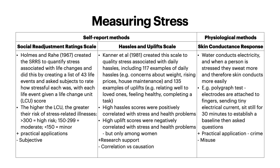When it comes to measuring stress, you've got self-report methods and physiological methods. Looking at self-report methods, Holmes and Rahe in 1967 created the Social Readjustment Rating Scale (SRRS) to quantify stress associated with life changes. They created a list of 43 life events and asked subjects to rate how stressful each was, with each life event given a life change unit (LCU) score. The higher the LCU, the greater the risk of stress-related illnesses. If they scored over 300 this was seen as high risk, 150 to 299 moderate, and less than 150 minor. Obviously there's practical application to this, but due to its self-report nature it is subjective.